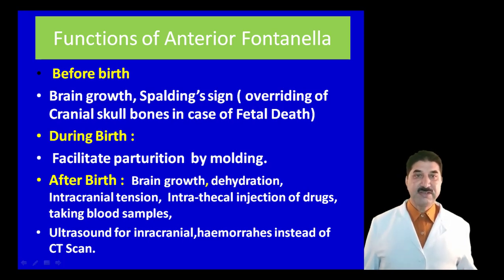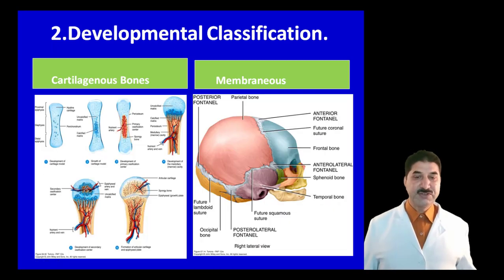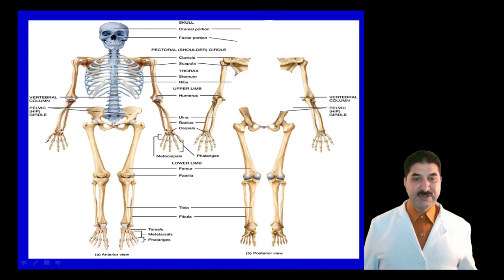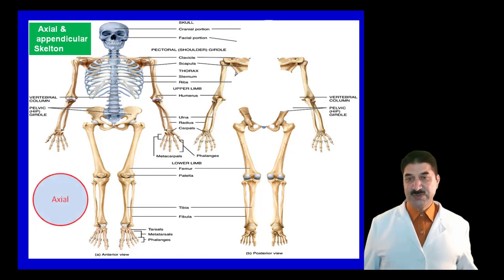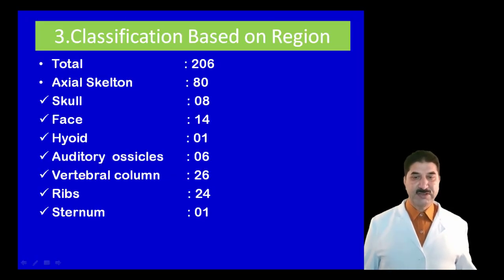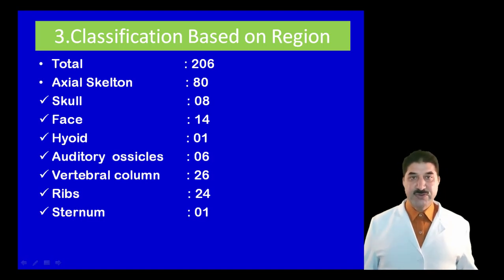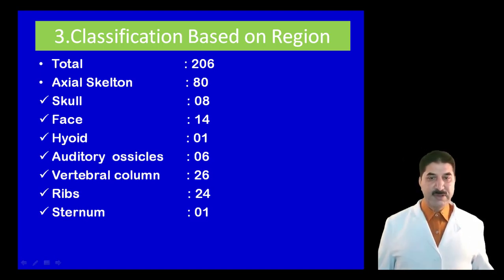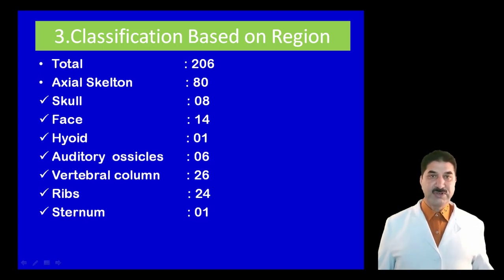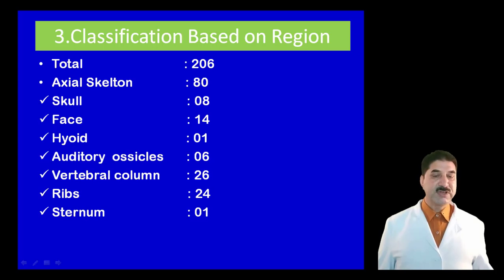Developmentally, bones are divided into cartilaginous bones and membranous bones. Another classification is based on the region: axial and appendicular skeleton. The axial skeleton includes bones of the skull, vertebral column, rib cage, and sacrum, while the appendicular skeleton includes the bones of the appendages — the limbs. In total, there are 206 bones in our body: 80 from the axial skeleton. Eight bones belong to the skull, 14 bones in the face, one hyoid, six auditory ossicles (malleus, incus, and stapes on each side), 26 bones of the vertebral column, 24 ribs, and one sternum.